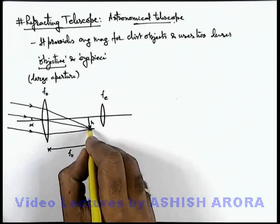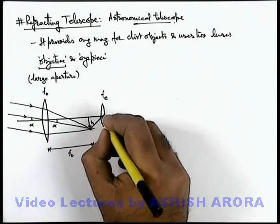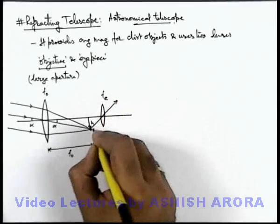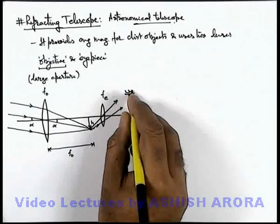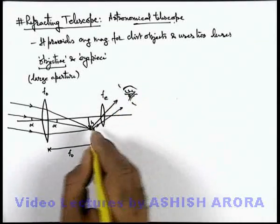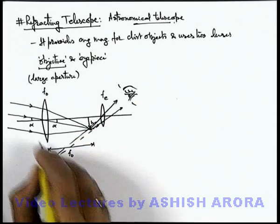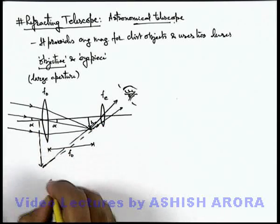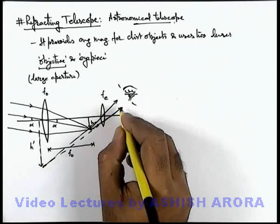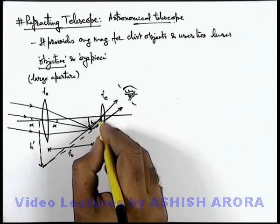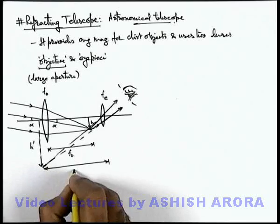In this situation, this intermediate image will act as an object for eyepiece and light rays will incident on the eyepiece. Finally, these light rays will be falling into the observer's eye and the final image will be seen by the observer. If this is the location where the image is obtained, this is the final image h prime. Then due to these two diverging rays, final image will be seen by the observer at a point which is at distance near point of the observer from eyepiece lens, as eye is considered to be very close to the eyepiece.